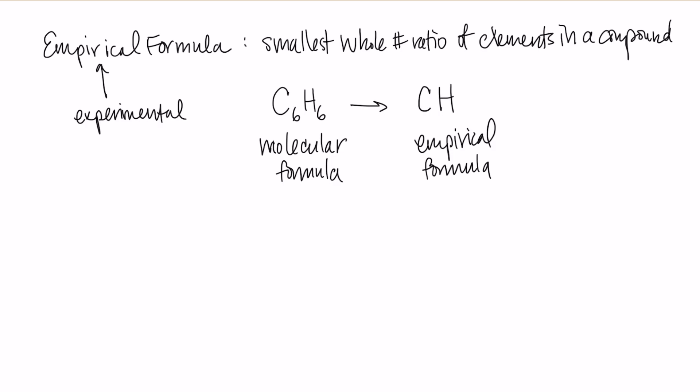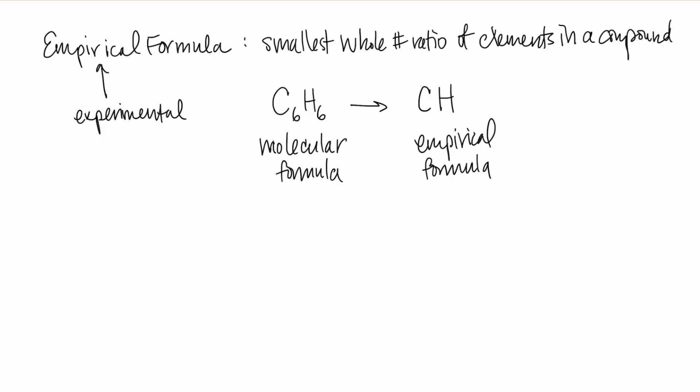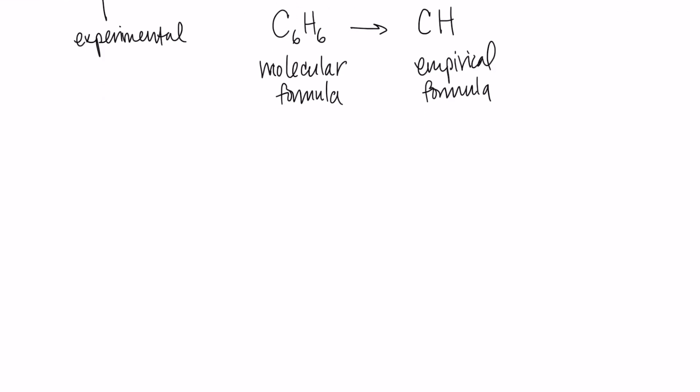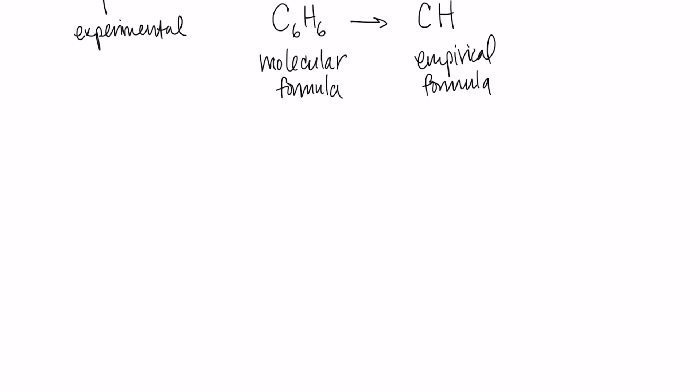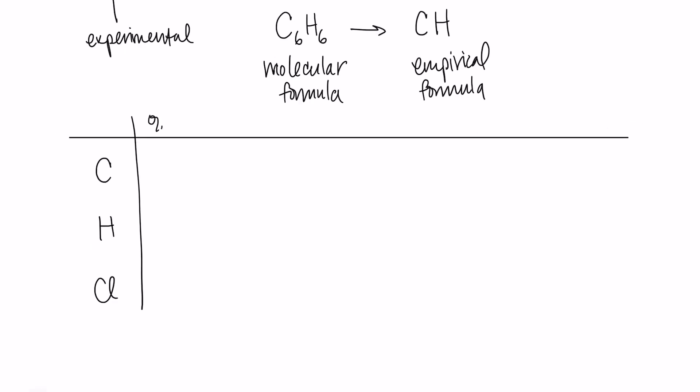So when I'm trying to find the empirical formula, I'm usually starting from an experiment that has found the percent composition. So I'm going to begin with percent composition, and I'm going to end with the empirical formula. I have an example here for a compound that contains carbon, hydrogen, and chlorine. And they've told me, I'm going to make a little table. They've told me the percent composition of each of these elements: that's 37.21% for carbon, 7.83% for hydrogen, and 54.96% for chlorine.